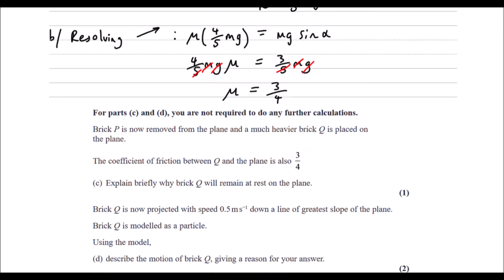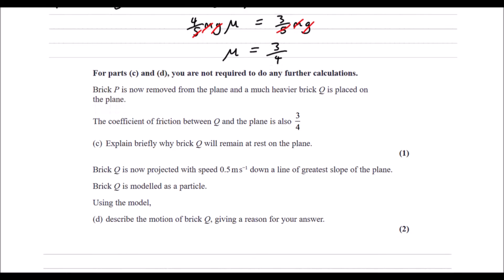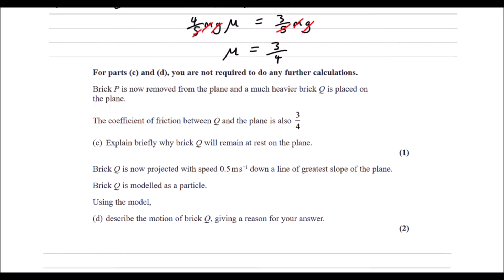For parts C and D, you are not required to do any further calculations. Brick P is now removed. And a much heavier brick, Q, is placed on the plane. The coefficient of friction is 3 quarters still.